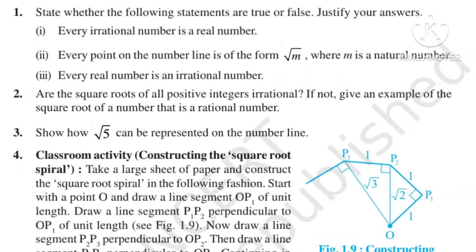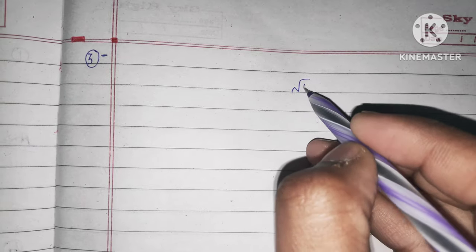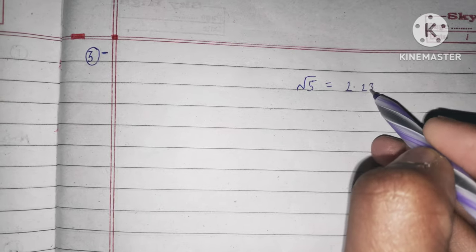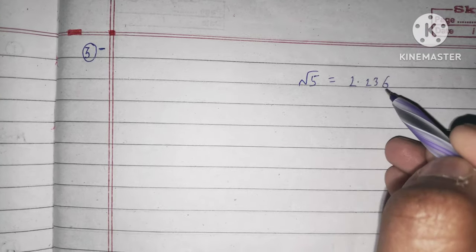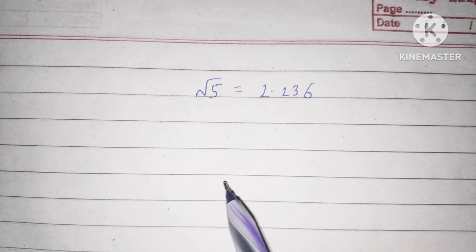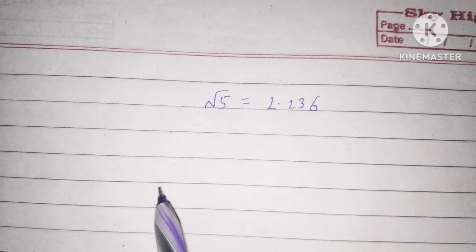The next question is: show how root 5 can be represented on the number line. Root 5 is approximately 2.236. First, let's draw a number line with markings at 0, 1, 2, 3, 4, and so on.